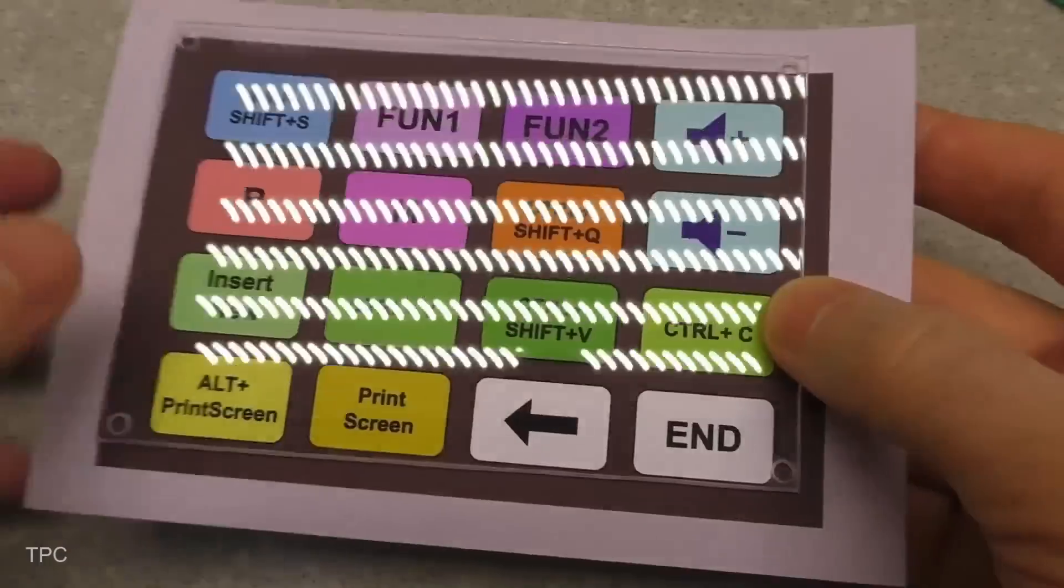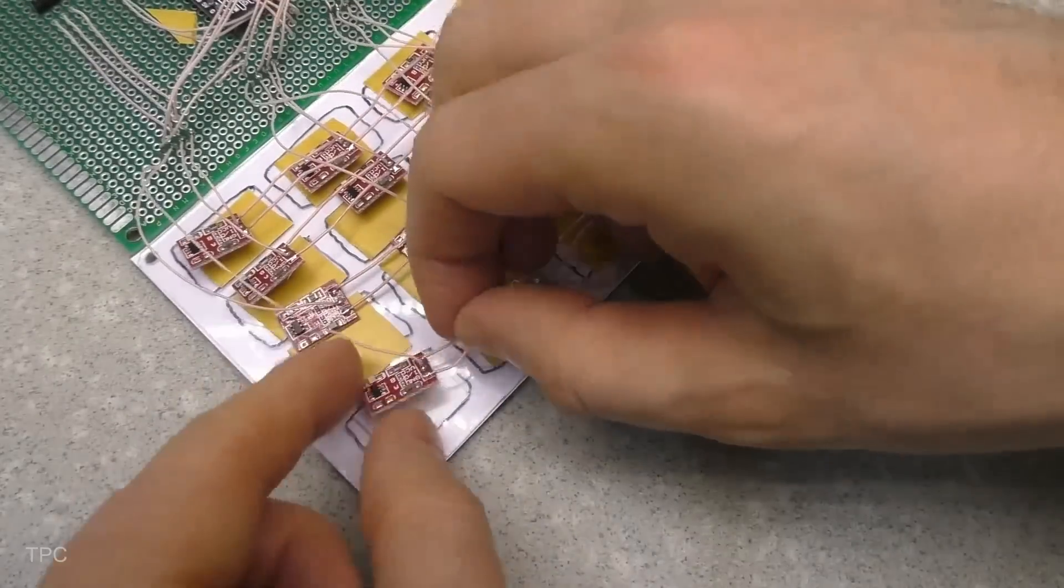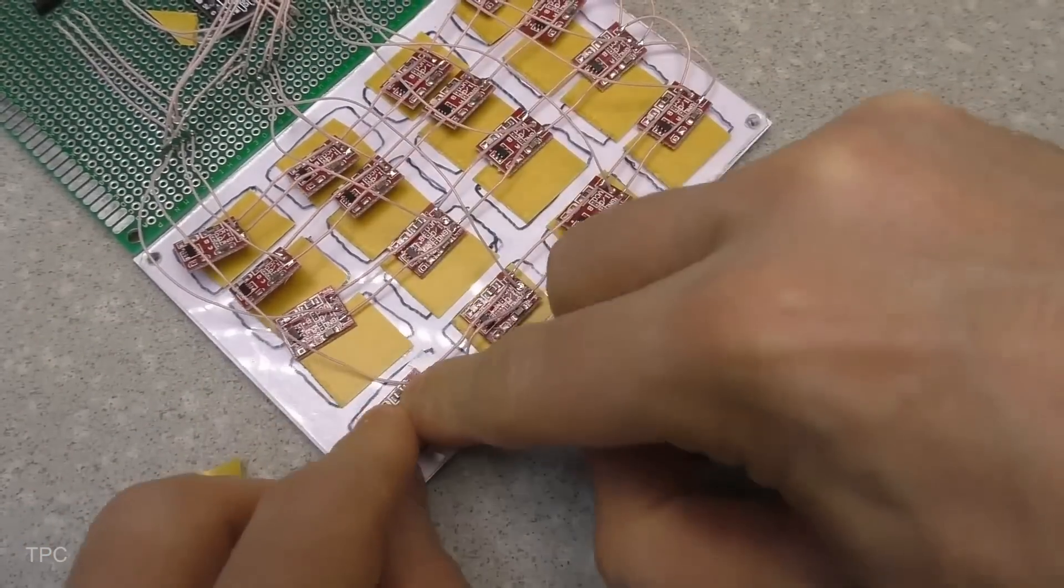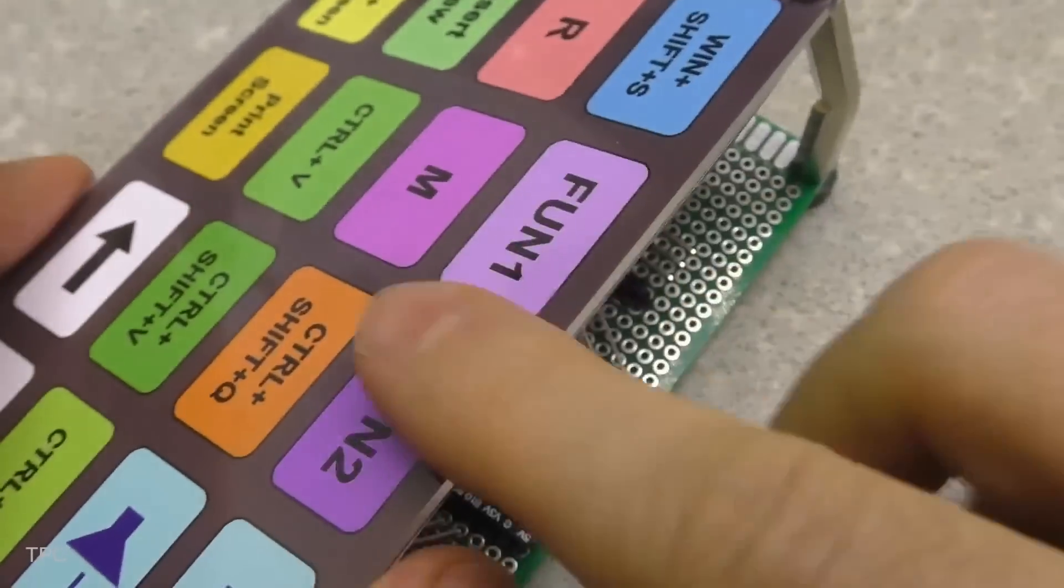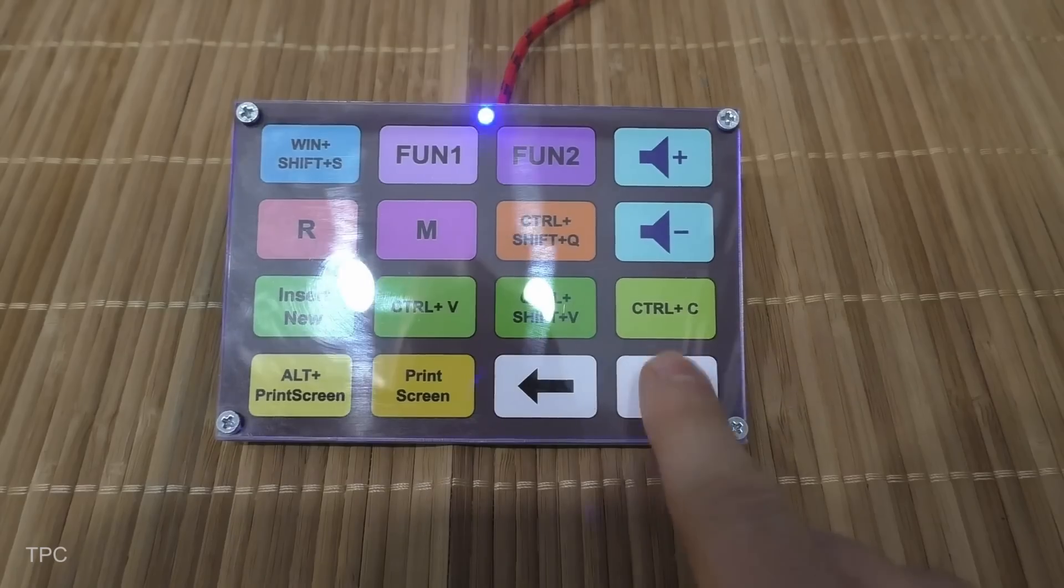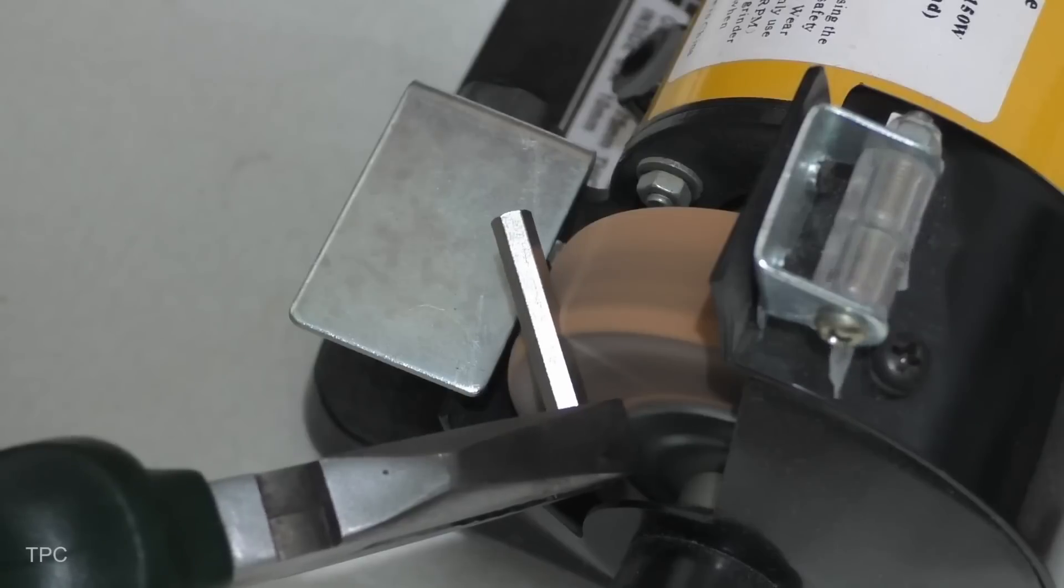For the button layout, he cut a transparent acrylic sheet the same size as the board and printed a custom button design, which he placed underneath the acrylic. He also added an LED indicator that lights up when a button is pressed.